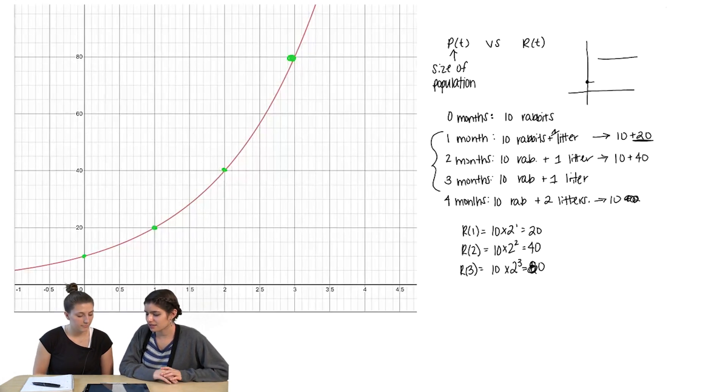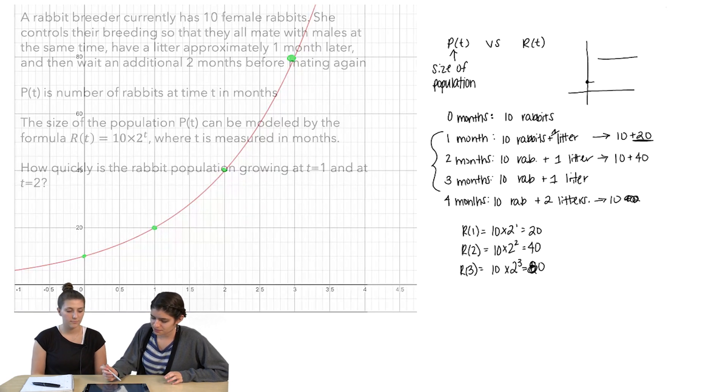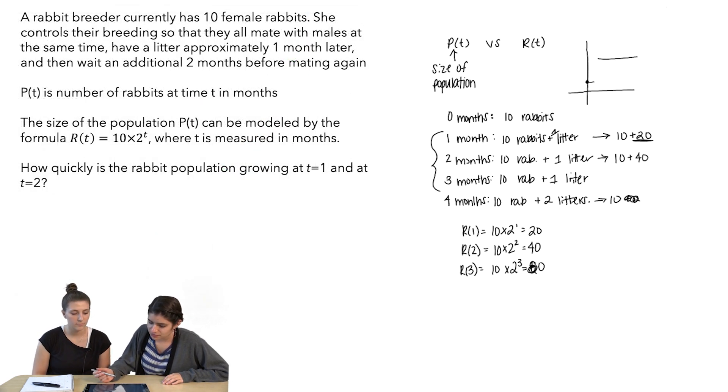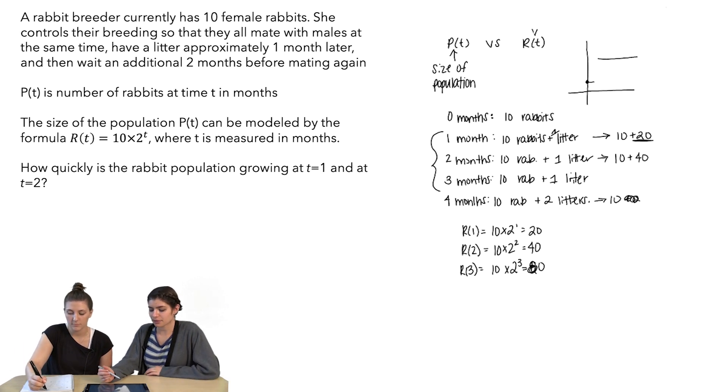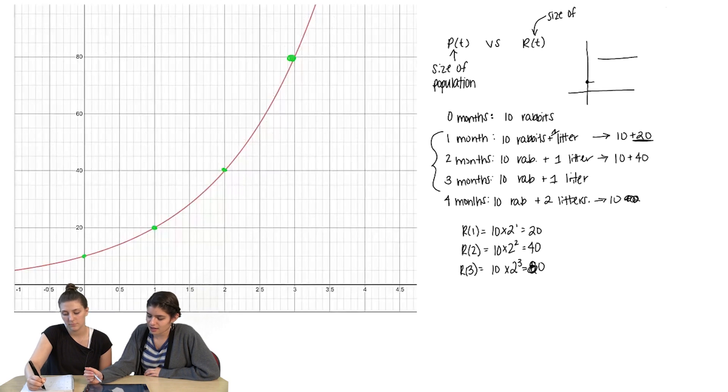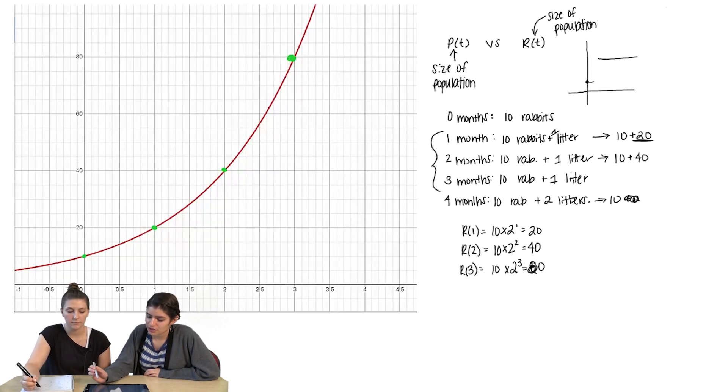So R(t) is telling us, according to the problem, R(t) measures the size of the population. So what that is saying is that at three months, the size of our population should be 80.